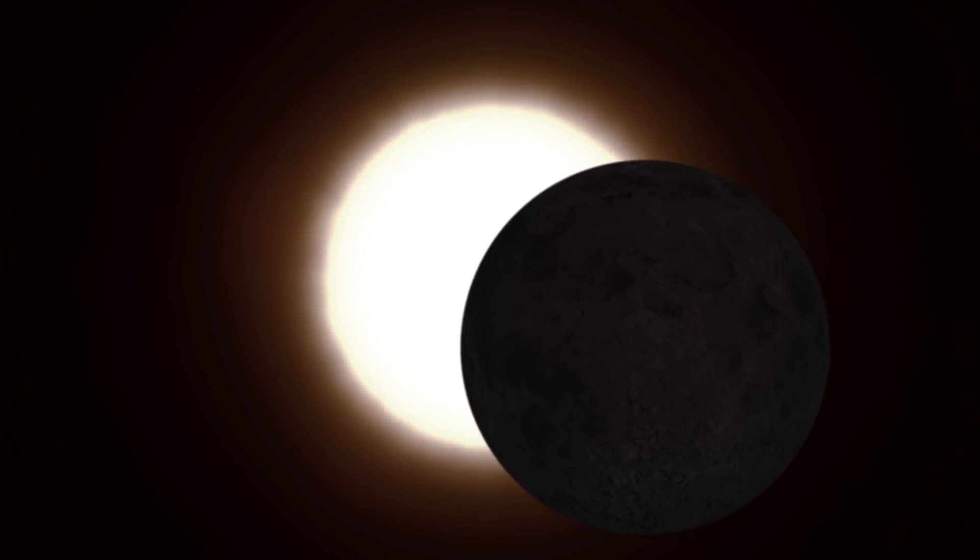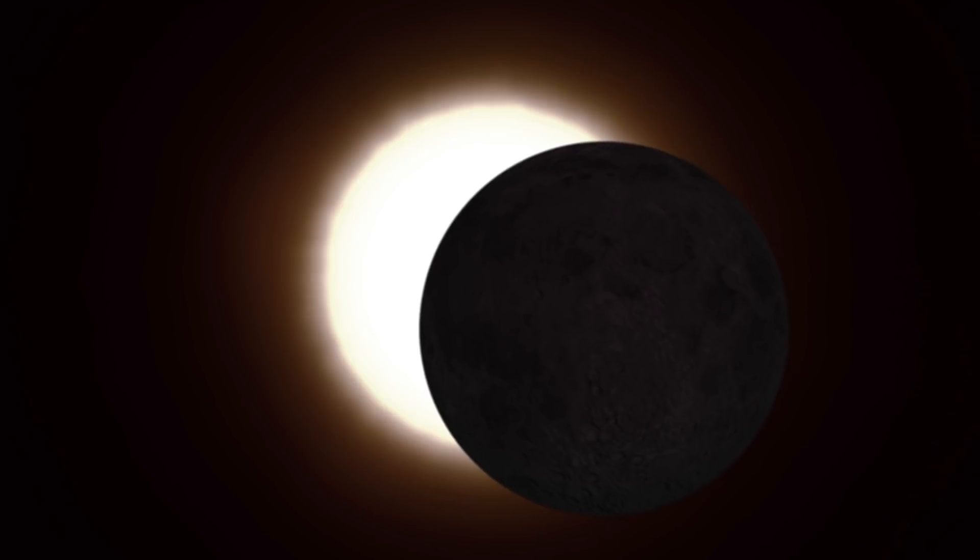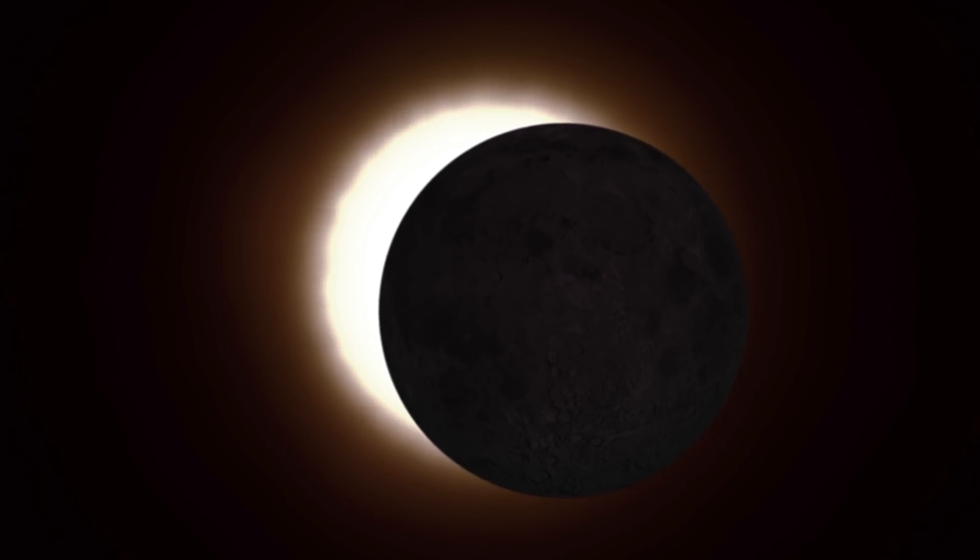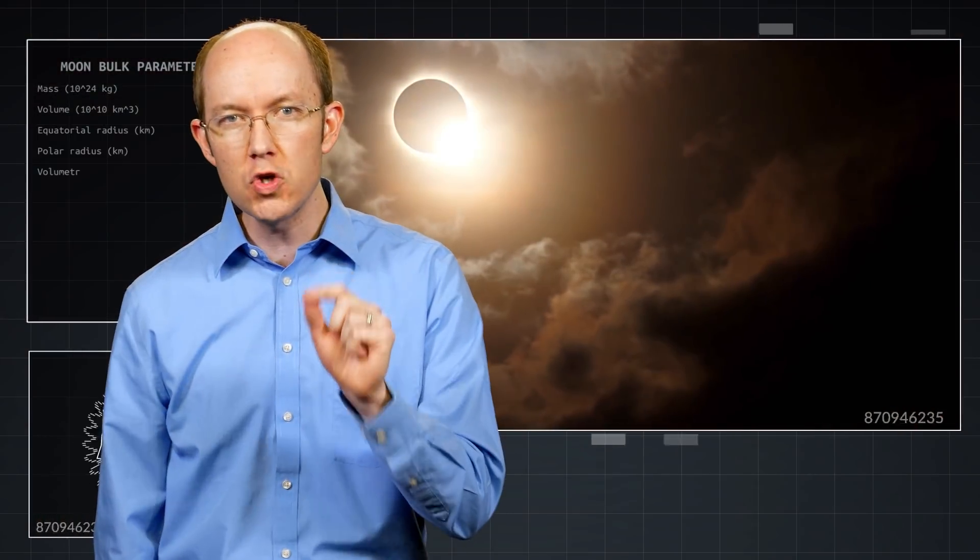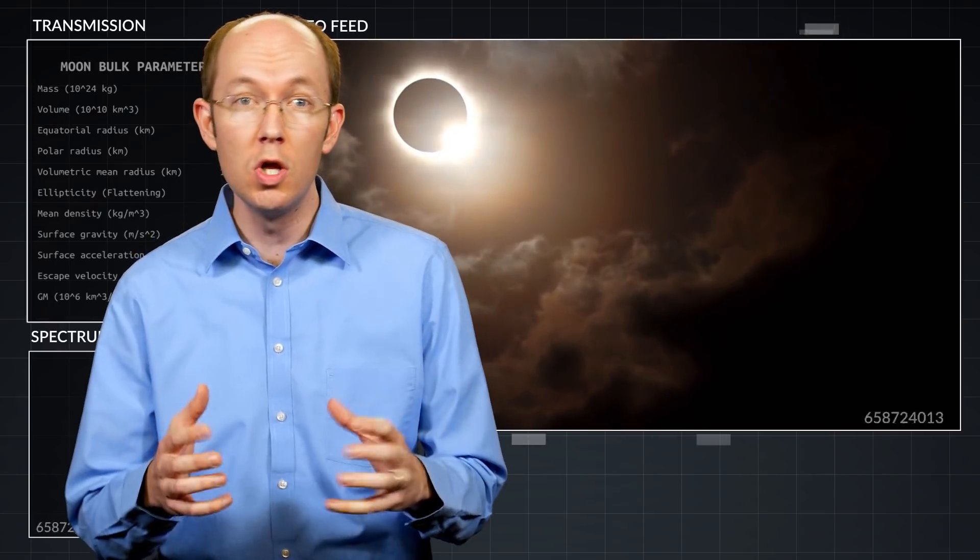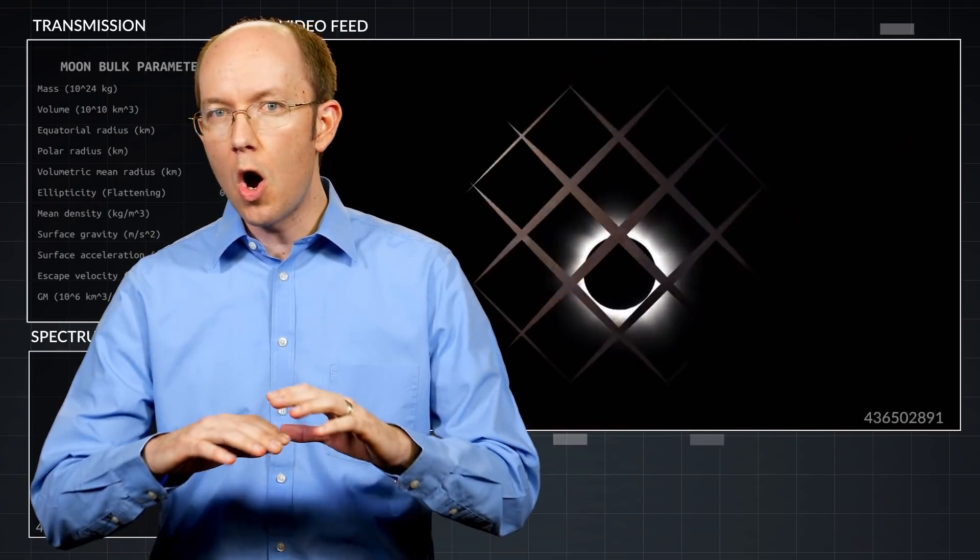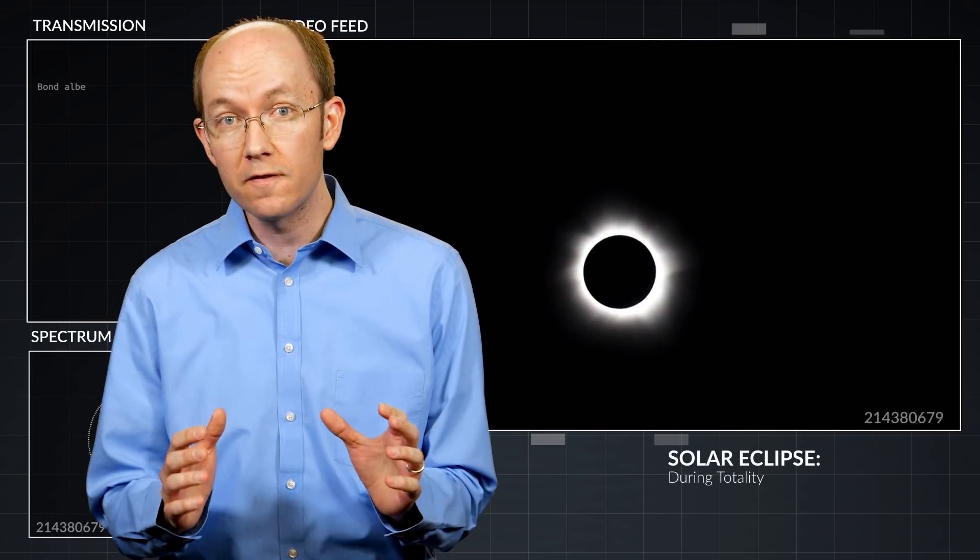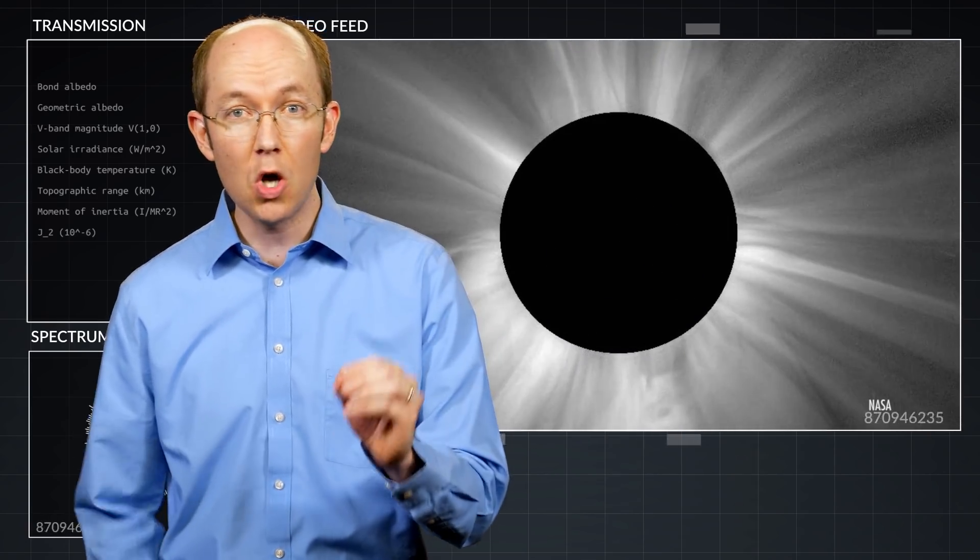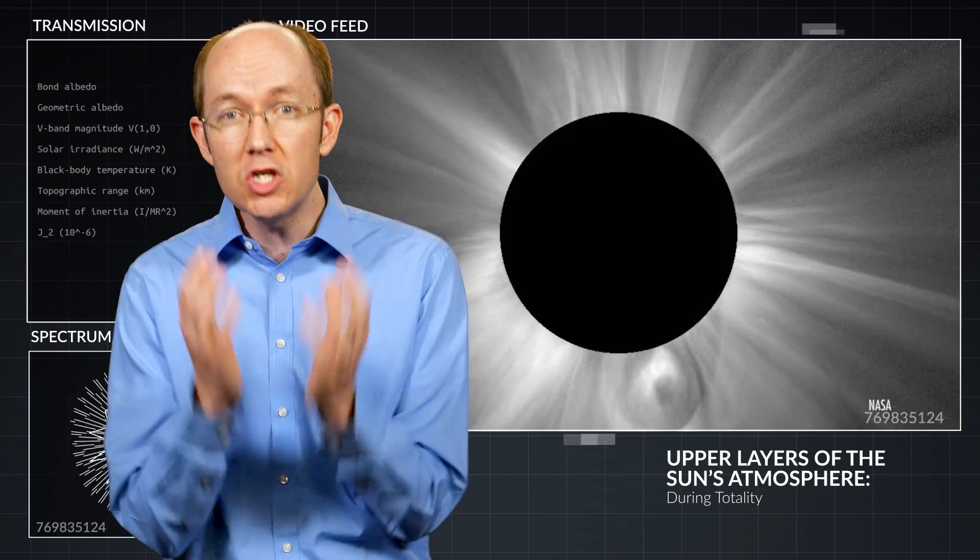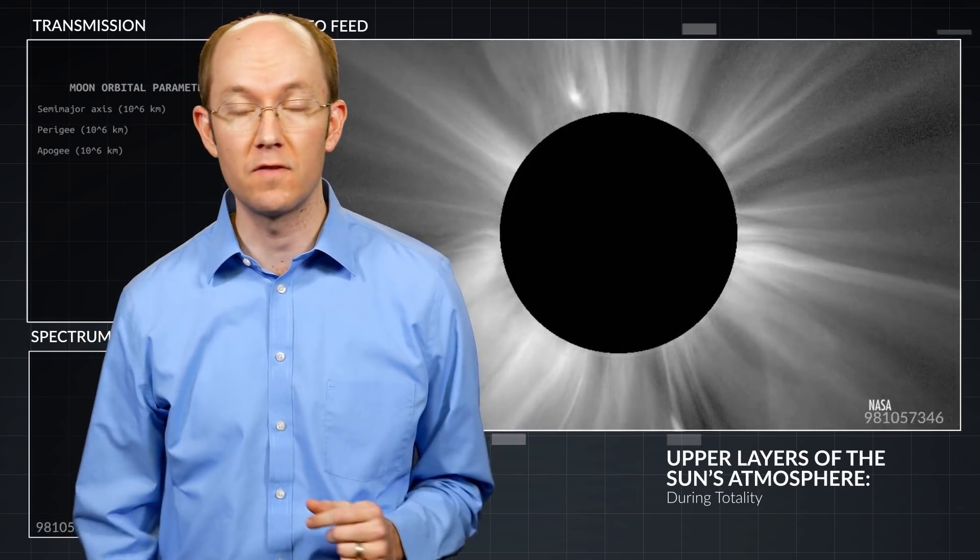For several hours the moon creeps in front of the sun, until for a few brief minutes the sun's bright surface is completely covered by the moon. These few dark moments within a total solar eclipse are the only moments when it is safe to look at the sun without specialized protection, and it's only during this time that you can visually see the upper layers of the sun's atmosphere.